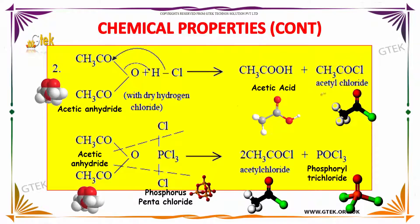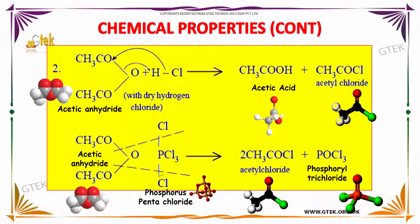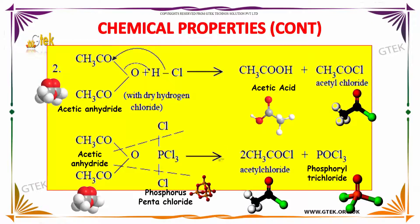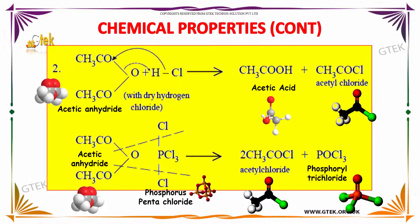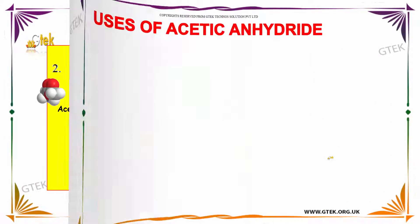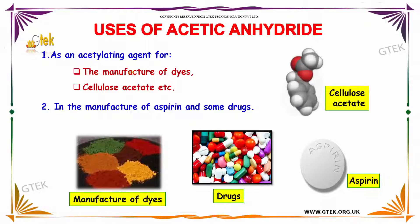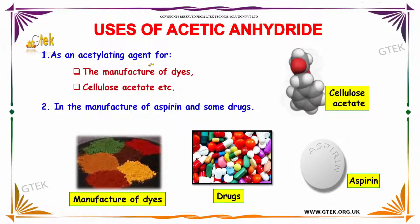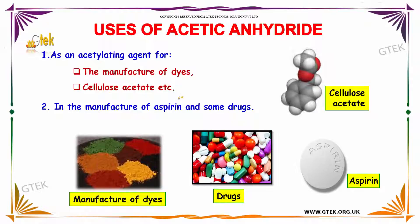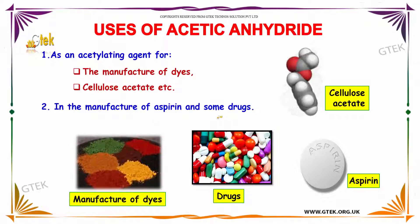When acetic anhydride is made to react with phosphorus pentachloride, it produces 2 moles of acetyl chloride along with phosphoryl chloride. Acetic anhydride is used as an acetylating agent for the manufacture of dyes and cellulose acetate, and also in the manufacture of aspirin and some drugs.